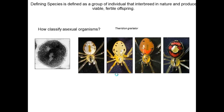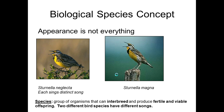When defining species, sometimes looks can be deceiving. Here we have spiders — do you think this is the same species? If you look closely, they do interbreed, and even though they come in many colors, they are the same species. Here are two birds that look very similar, but they are two different species. They have two different songs, and in birds, mating calls differ, so they don't interbreed and are regarded as two different species.